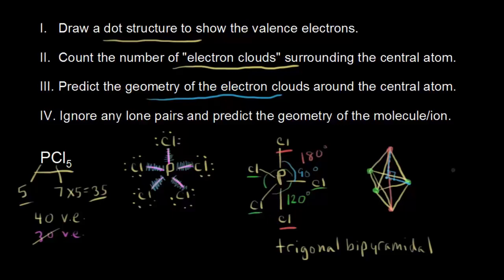It's important to understand this trigonal bipyramidal shape because all of the five-electron-cloud drawings we're going to do will have the electron clouds wanting to take this shape. For step 4, ignore any lone pairs and predict the geometry of the molecule. Since there are no lone pairs on our central phosphorus, the electron clouds take a trigonal bipyramidal shape, and so does the molecule. Let's do another example: sulfur tetrafluoride.